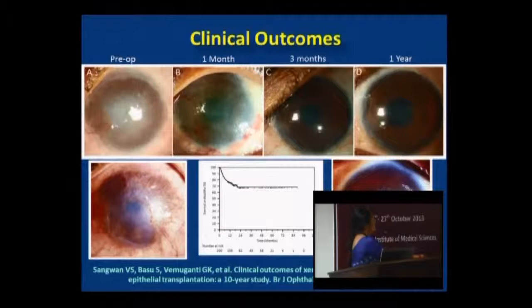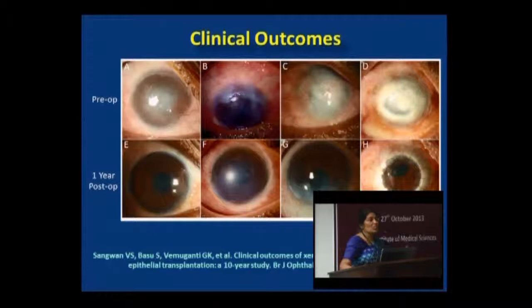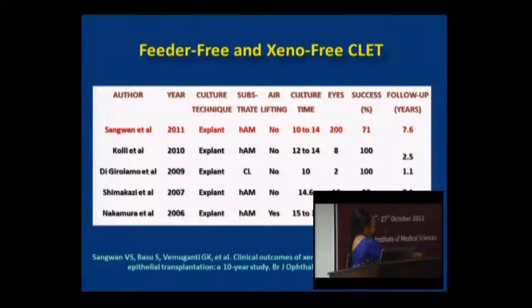Unlike other areas where there is no objective proof of concept, we have very good objective evidence that clinically the vascularization subsides, the eye becomes quiet, transparency is restored, and in some cases there is failure. A Kaplan-Meier curve shows the success. Even in bone-dry cases, we restored vision by first limbal epithelial transplantation, then corneal transplantation, and these patients see 6/6. Even after two procedures, patients still do well.